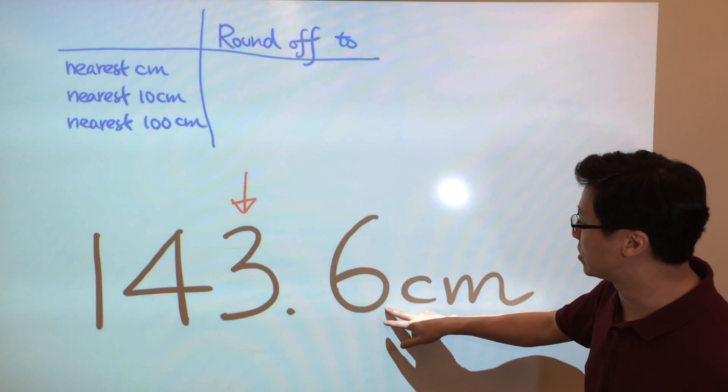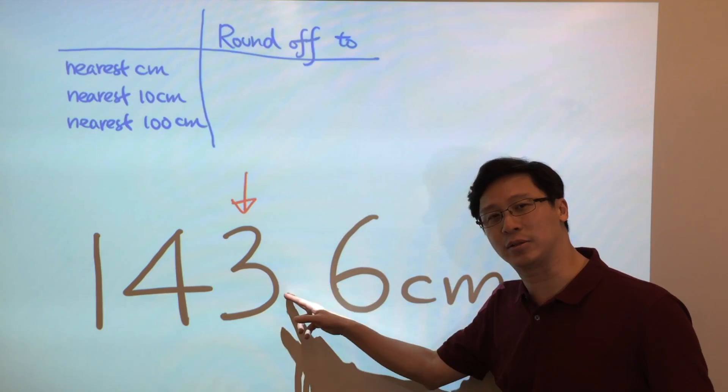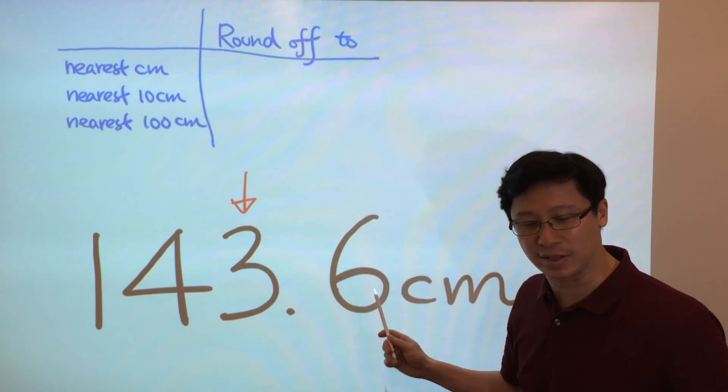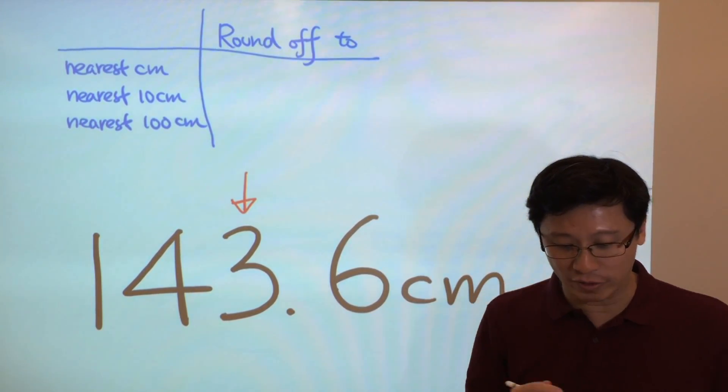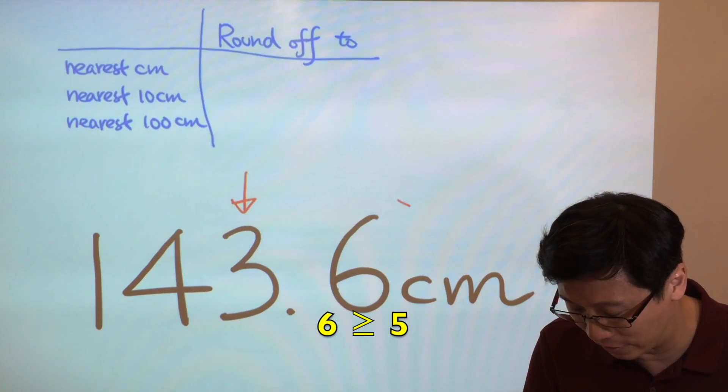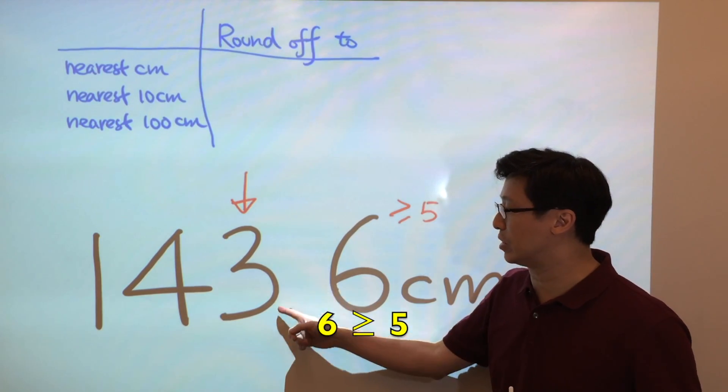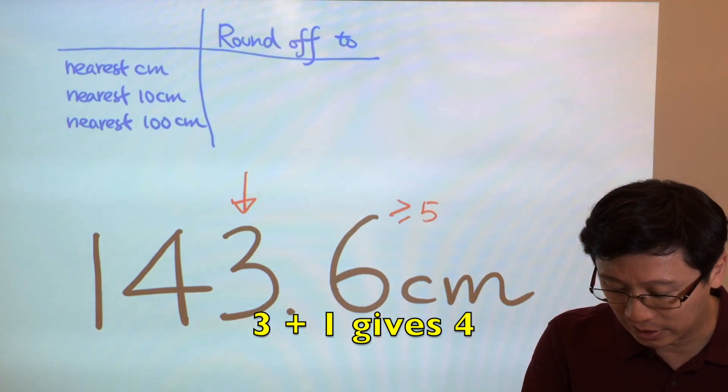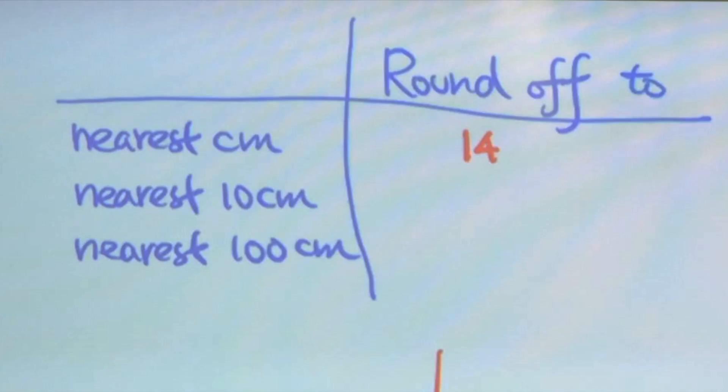And we consider the number just right next to the cm. This 0.6 cm, the number 6, is 5 or above, greater than or equal to 5. That means we have to increase this 3 cm by 1 cm. That means the answer will be 144 cm.